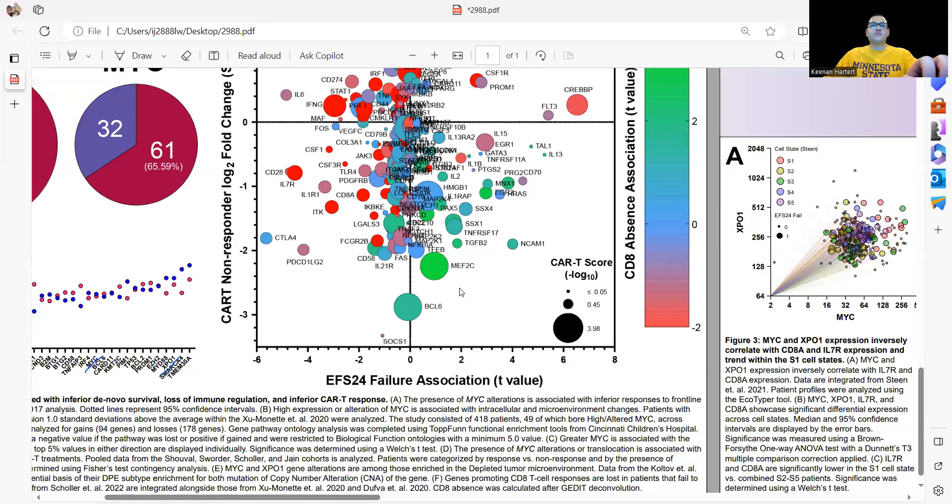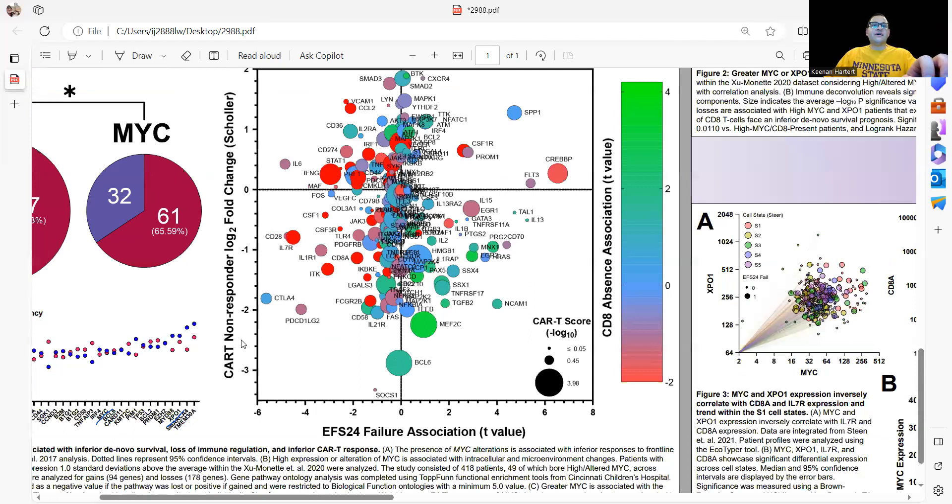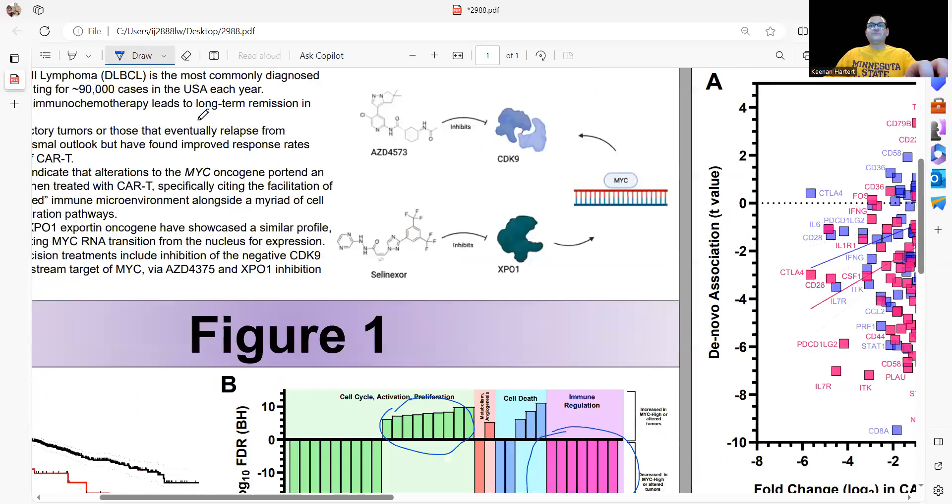We take Schaller's data, which was excitingly presented at last year's ASH meeting. Looking at non-responder fold change, genes that go down when you fail CAR-T, and also de novo EFS24 - event-free survival over 24 months. What genes are low in both? We see a ton of immune regulatory genes. We're also seeing what's being lost when CD8 itself is not available after immune deconvolution.